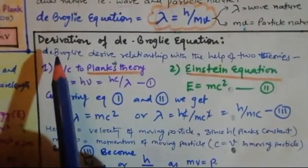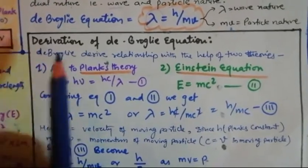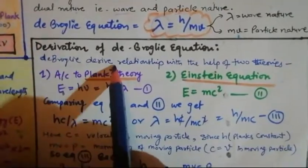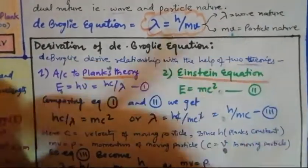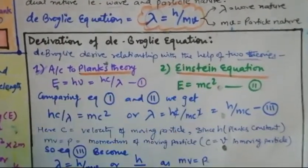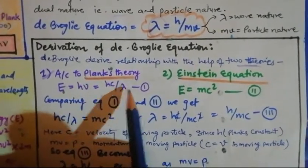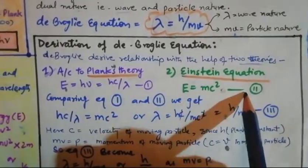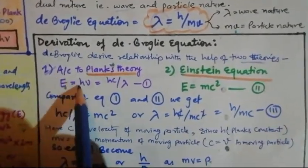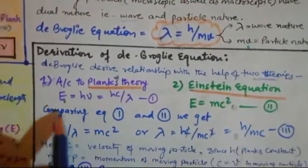Let's discuss the derivation of the de Broglie equation, which is very important from an examination point of view. De Broglie derived the relationship with the help of two theories — he clubbed two theories together. The first is Planck's theory: E = hν = hc/λ (equation 1). The second is Einstein's theory: E = mc² (equation 2). You can see that energy is expressed as hν in one and as mc² in the other, so we will compare both equations.